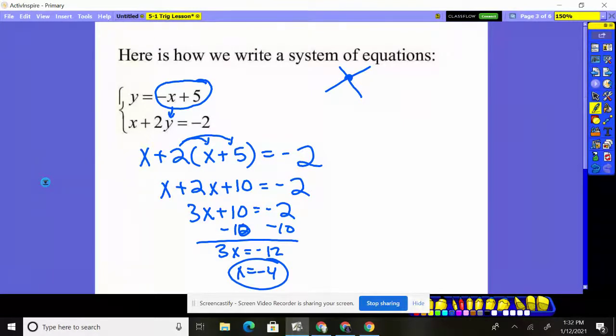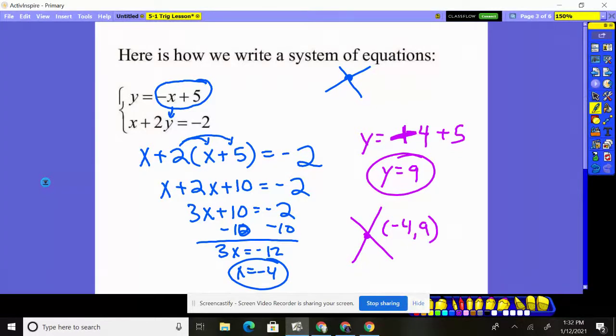Now you can't stop there, because you've got to remember, you've got to figure out y's value, too. We're looking for a point of intersection. So all I've got to do is plug x negative 4 into either one of the two equations. I'm just going to go back to the y equals equation. y is equal to the opposite of x. So what's the opposite of negative 4? So the opposite of negative 4 plus 5. With the opposite of negative 4, that's a plus 4. So y is 9. There's my solution. x is negative 4. y is 9. That means they intersect at this point. Negative 4, positive 9. That's where the two lines would be crossing.